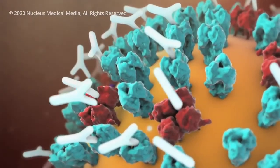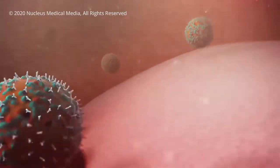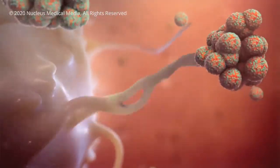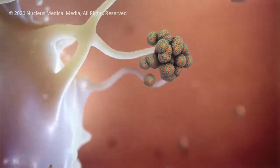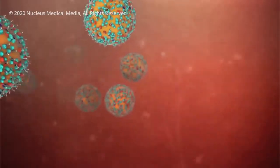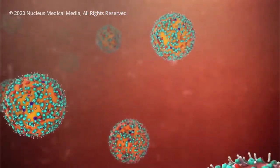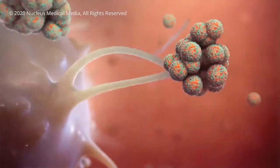Antibodies then attach to the virus and prevent it from attaching to your cells. Your immune system then responds to signals from the antibodies by consuming and destroying the clumps of viruses. If you then catch the real virus at a later stage, your body would recognize it and destroy it.